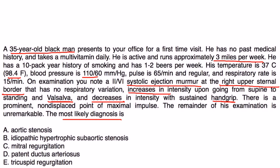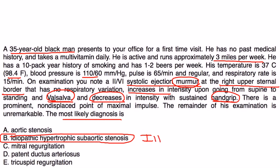Well, this is a very good question that basically describes that murmur. And when it increases, it increases with Valsalva, decreases with hand grip. And that's classic for idiopathic hypertrophic subaortic stenosis, IHSS, or also known as hypertrophic cardiomyopathy.